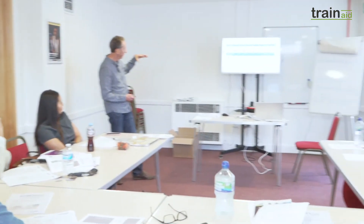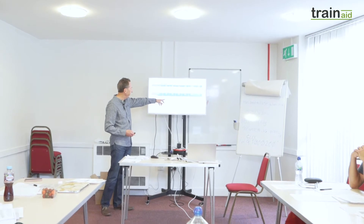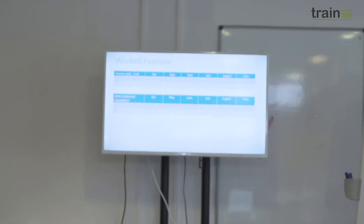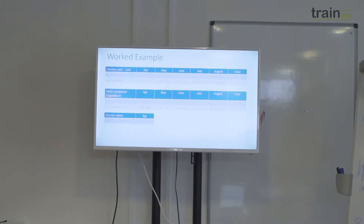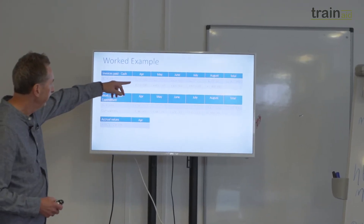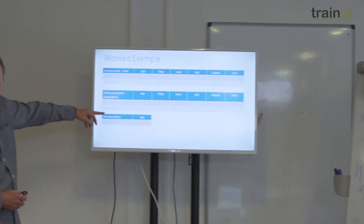The way to calculate the accrual — the way to get from cash to expenditure — the first thing we do is calculate the cumulative value of each. So cumulative value of cash: 2, 4, 6, 8, 10. And then the cumulative value of work completed also gets to a million pounds. Remember that the value of the accrual gets us from the cash figure to the expenditure figure. So what's the value that goes in here to get from £200,000 to £240,000? What's the amount that appears in the April books? 40,000. Correct.